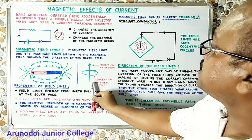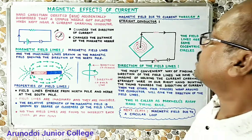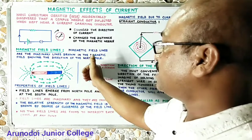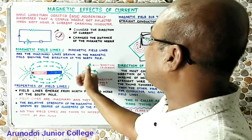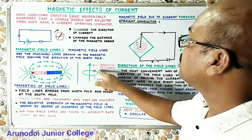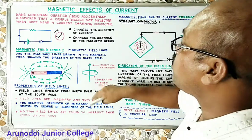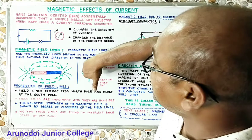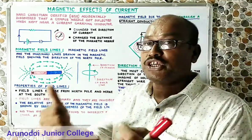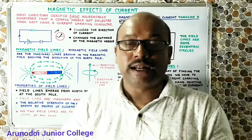Looking at the diagram, the current-carrying conductor is straight with current going upward. Holding it in the right hand with the thumb pointing upward, the four fingers curl anti-clockwise — this is the direction of the magnetic field lines. Conversely, if the current moves in the downward direction, the thumb points downward and the four fingers curl in the clockwise direction. Using this right hand thumb rule, we can easily find the direction of magnetic field lines around any straight current-carrying conductor.